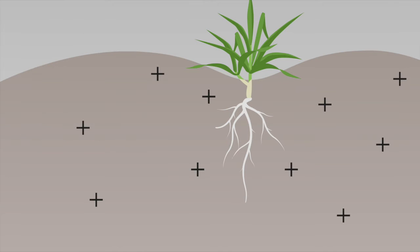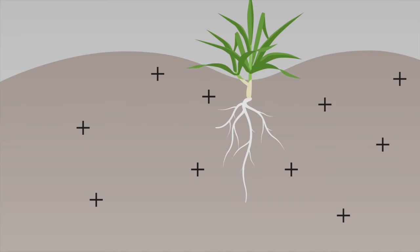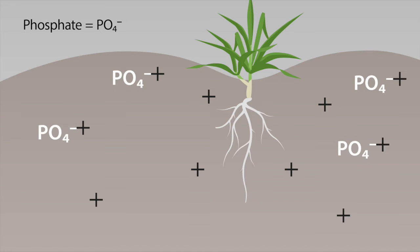This is where the soil becomes positively charged and instead attracts negatively charged ions like phosphates, nitrates, sulphates, and chlorides. Anion exchange capacity is increased as soil becomes more acidic.